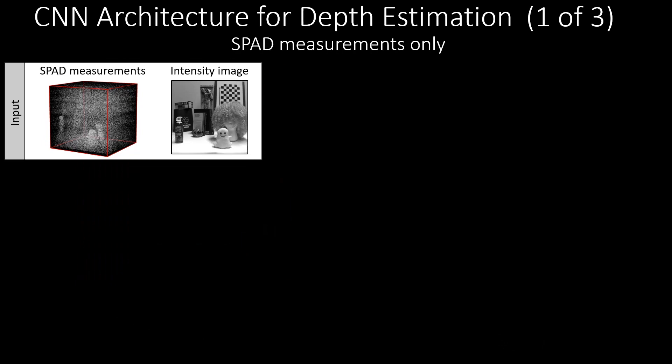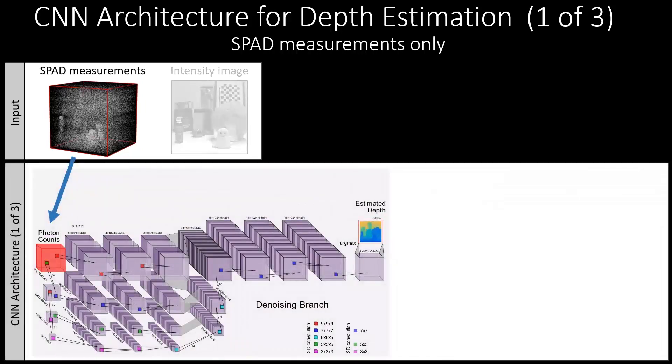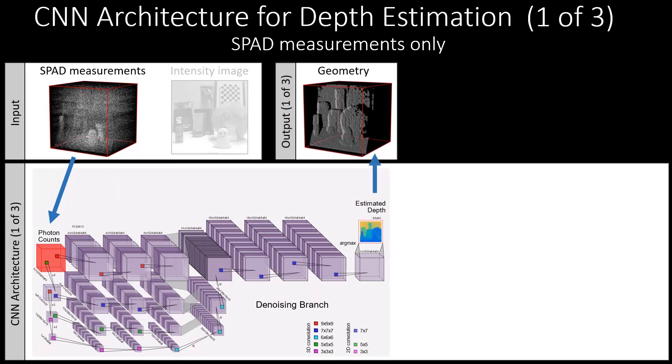We propose three variants of a convolutional neural network, or CNN, to model the full pipeline for depth estimation from raw measurements. In the first case, the SPAD measurements alone are passed into the CNN as input. The network processes the data at multiple resolutions using 3D convolutional layers and estimates the output depth.